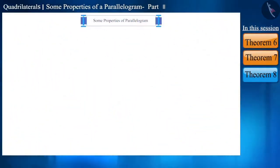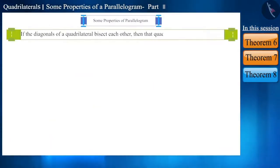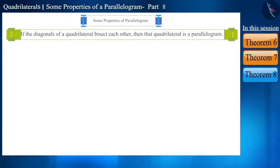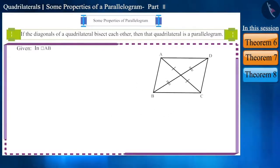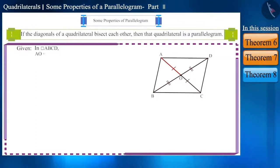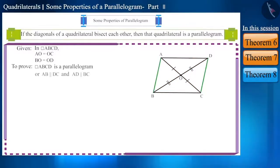Now let's move to the next theorem. If the diagonals of a quadrilateral bisect each other, then that quadrilateral is a parallelogram. This is the converse of the previous theorem. That is, there is a quadrilateral ABCD whose diagonals bisect each other at point O — AO is equal to OC and BO is equal to OD. So, we have to prove that this quadrilateral is a parallelogram, or that the opposite sides of this quadrilateral are parallel.